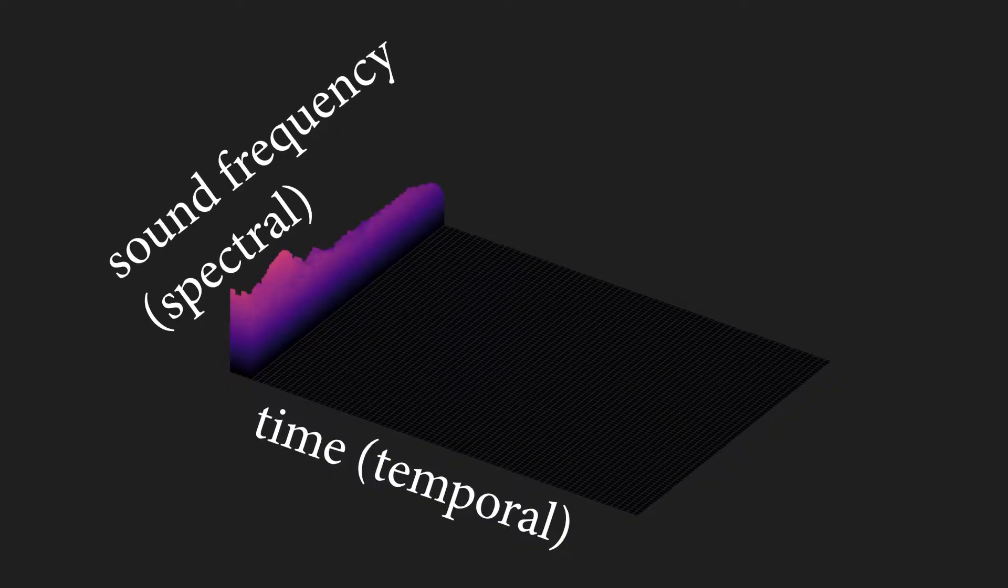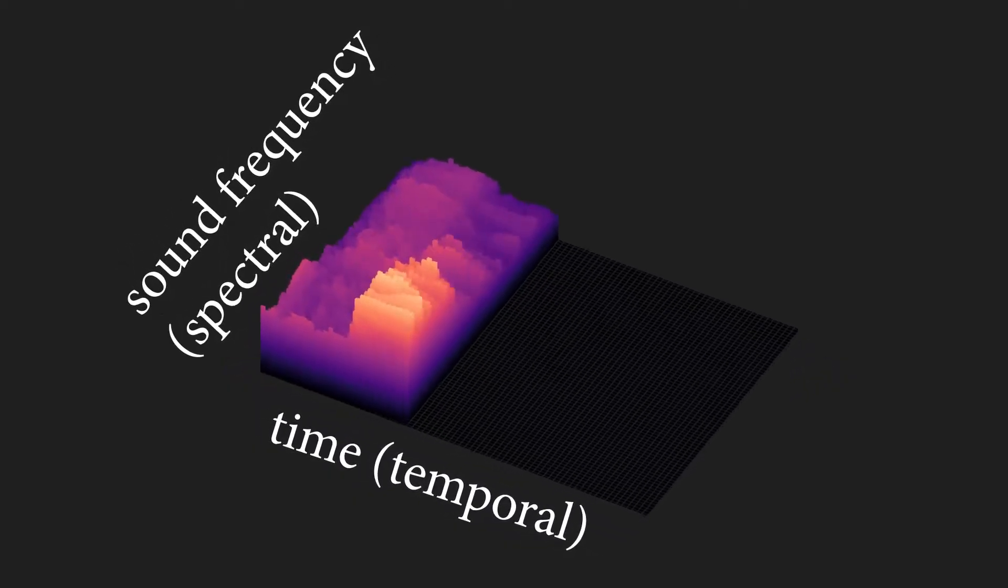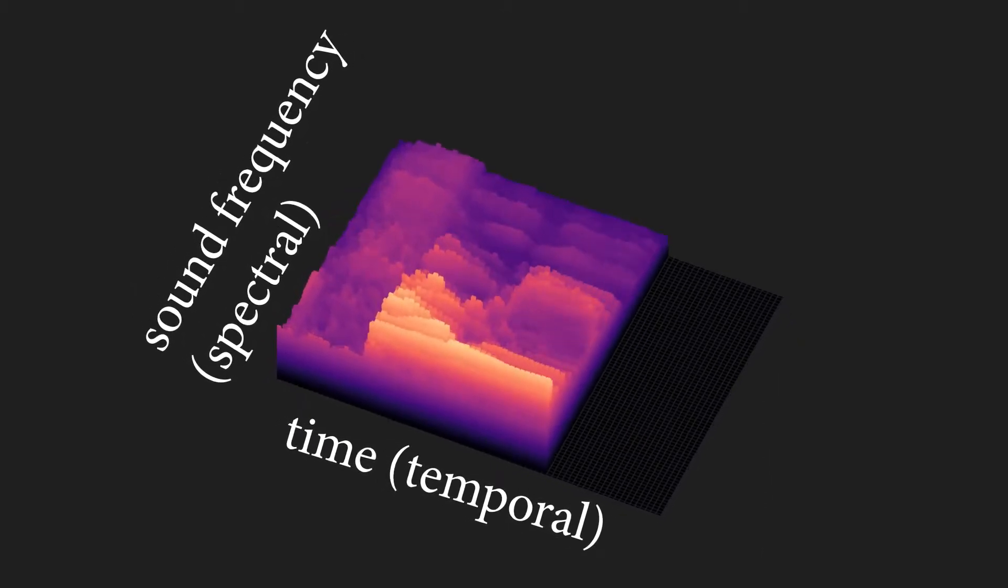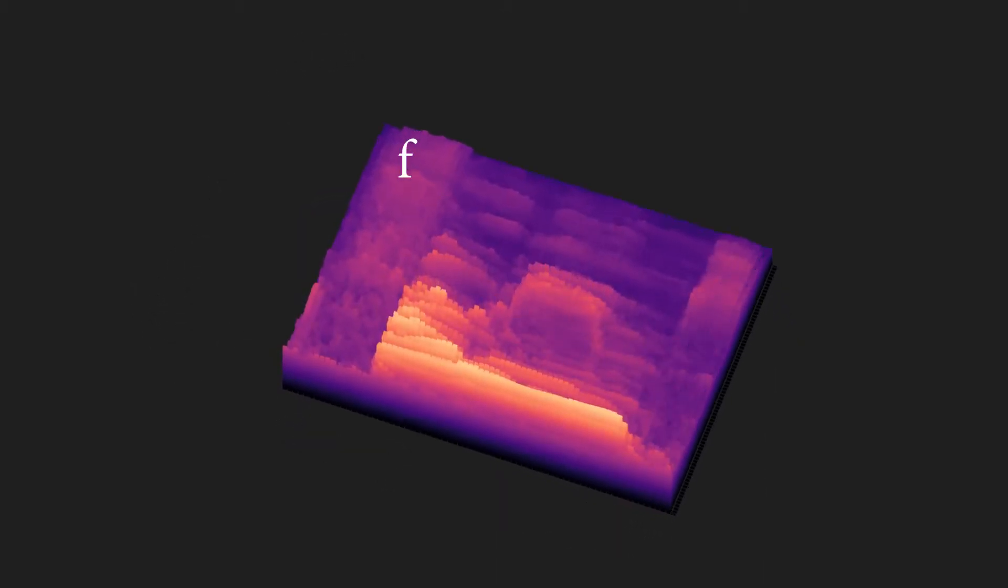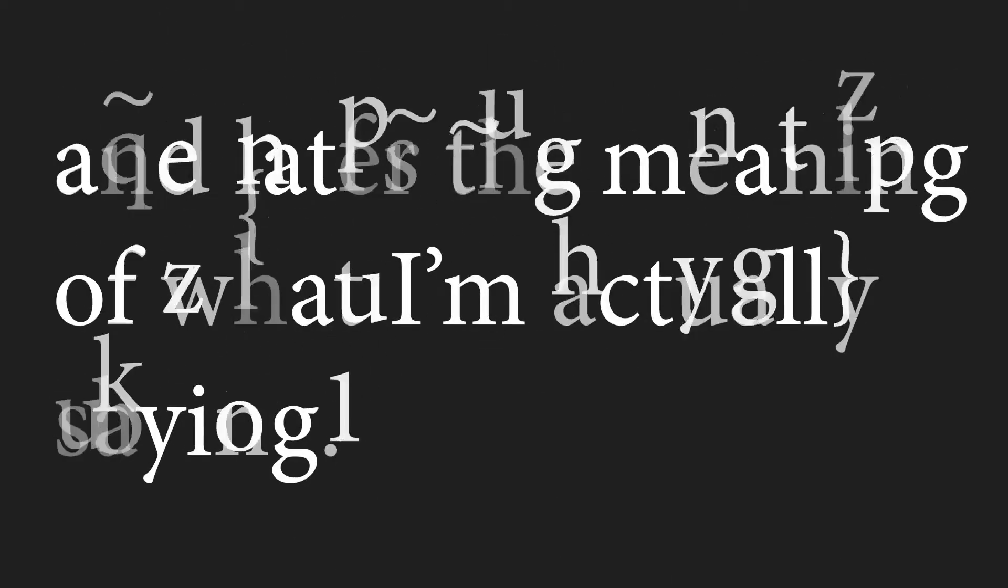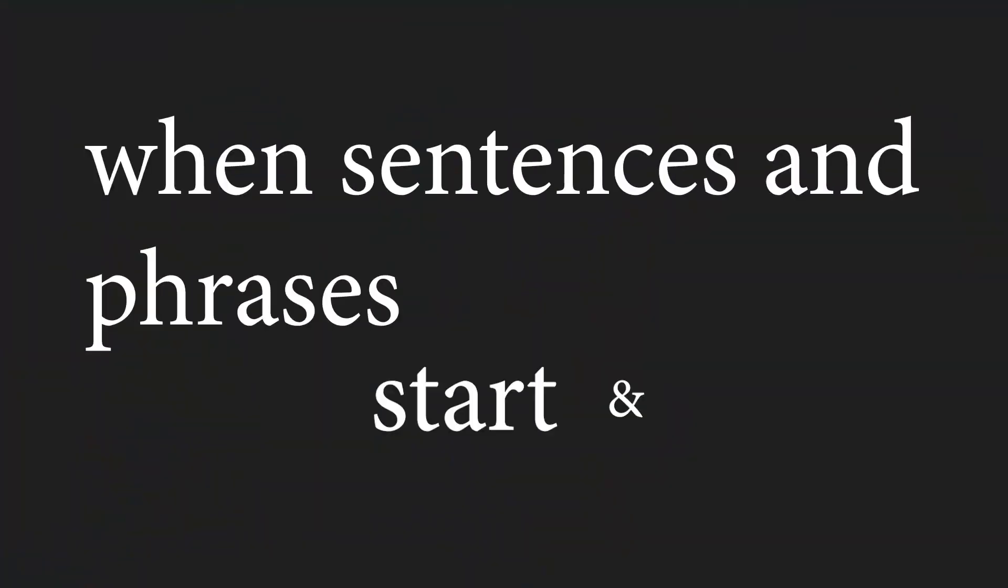This is probably something that your brain is doing right now. Vibrations at your ear are being converted into spectral and temporal cues that are later processed by different levels of your auditory system to convert them into things like phonemes, syllables, words, and later the meaning of what I'm actually saying. The brain is also able to parse out things like when sentences and phrases start and stop.